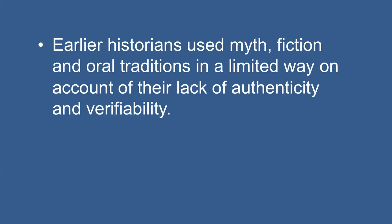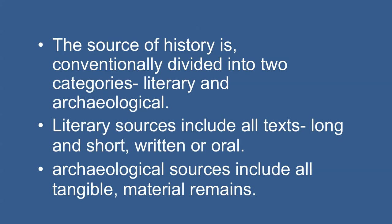Earlier historians used myth, fiction and oral tradition in a limited way on account of their lack of authenticity and verifiability, but today these unconventional sources are being used innovatively. Written material can be verified, cited and cross-checked, while oral evidences such as myths and folk songs were never considered a valid source. The sources of history are conventionally divided into two categories: Literary and Archaeological. Literary sources include all texts, long and short, written or older. Archaeological sources include all tangible material remains.